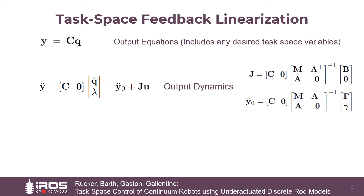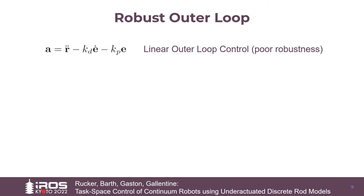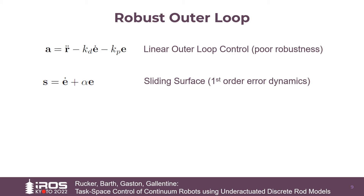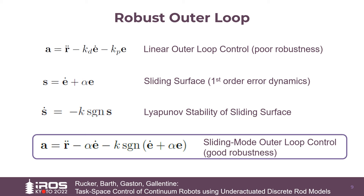The result can be used to perform input-output feedback linearization as an inner-loop control law. The feedback linearization requires strong inertial coupling between the control input and the task space output, and a damped version increases robustness when coupling is weak. Armed with the task space feedback linearization, we could employ a standard linear outer loop control law, but this combination has been shown to exhibit poor robustness to parameter uncertainty. Instead, we propose a standard sliding mode control structure to result in first-order error dynamics. Lyapunov stability of the sliding condition is then achieved by a switching control law with boundary layer to eliminate chatter.